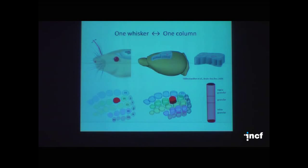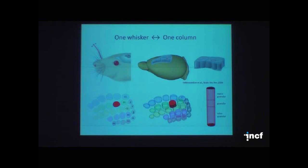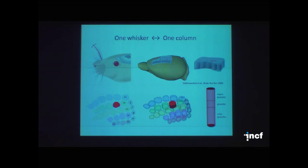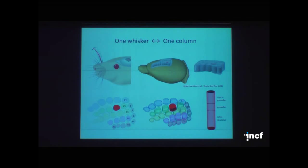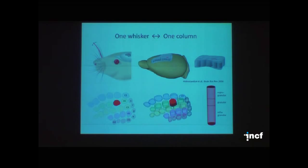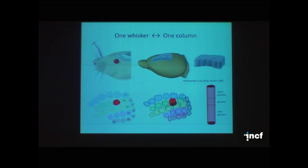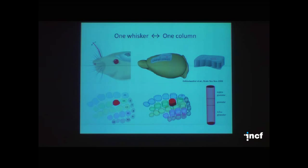For those not familiar with the whisker system: the nice thing about it is that there's a functional and anatomical correspondence between a single facial whisker on the animal's snout and segregated areas in the cortex called barrel columns. There's a network of about 18 to 20 thousand neurons in the cortex that processes the information from a single whisker, and neighboring columns process information from neighboring whiskers. In a thalamocortical view it resembles a cylinder — hence it's called a cortical column.